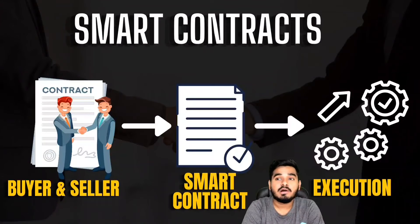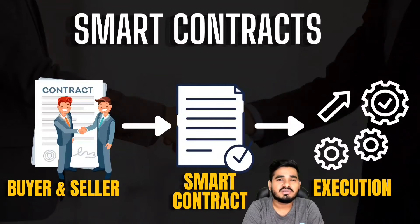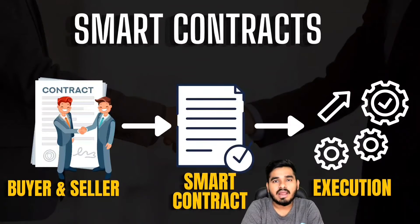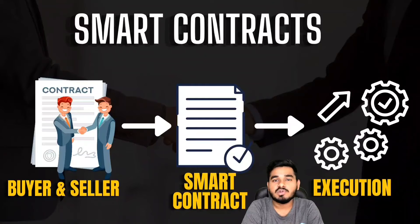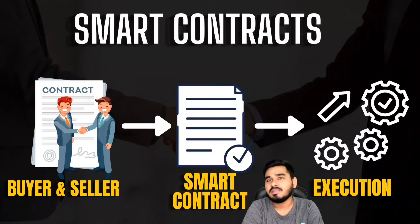One important future technology in blockchain is smart contracts. Smart contracts are written in Ethereum, which is a decentralized application that runs on blockchain technology. We will see what Ethereum is in the coming videos, but let's understand what a smart contract is.